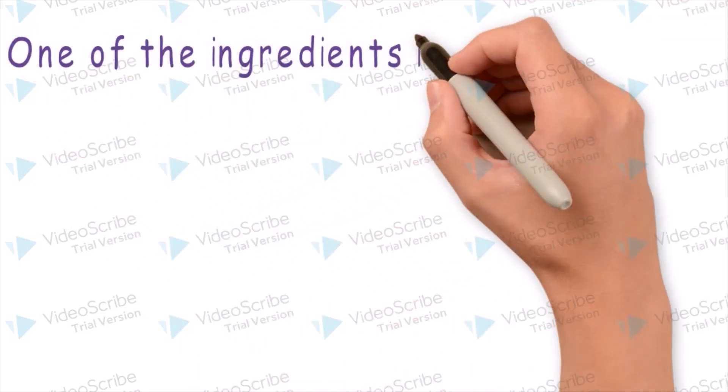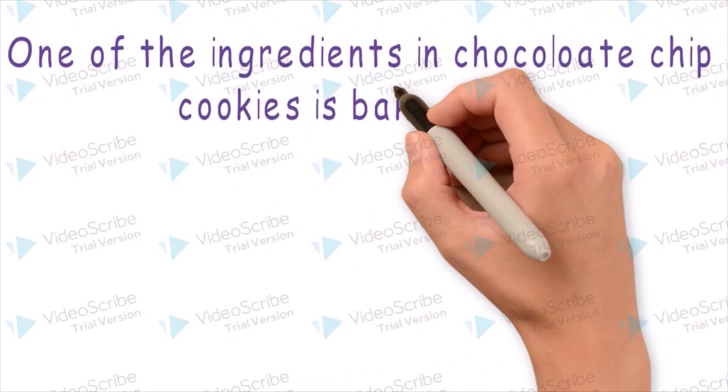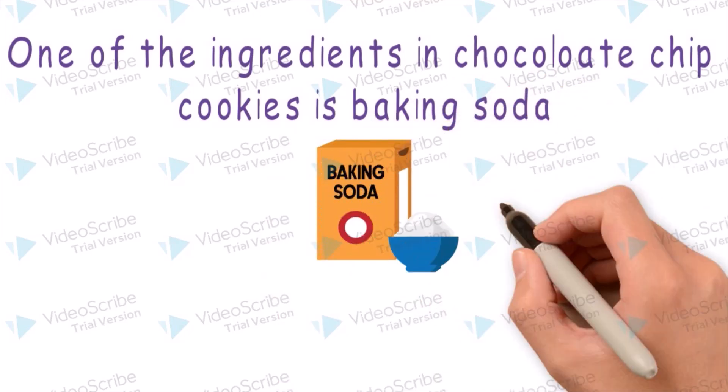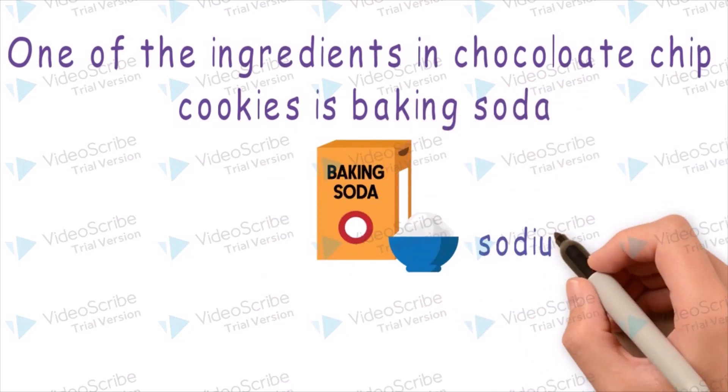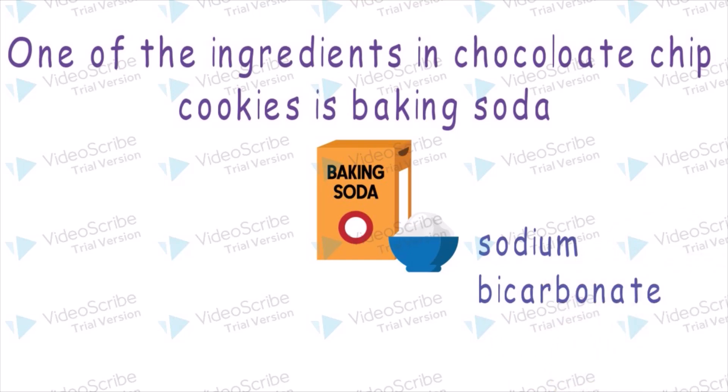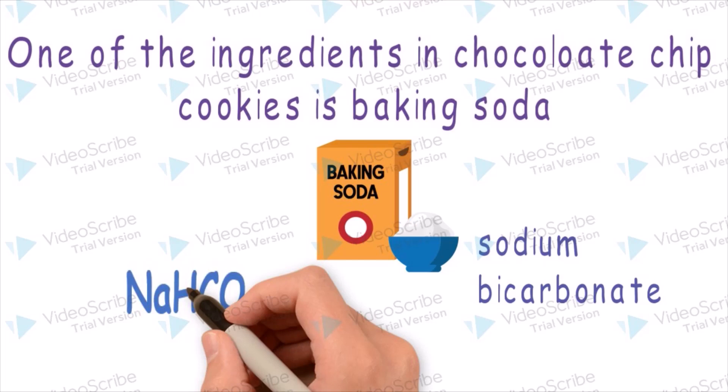One of the ingredients in chocolate chip cookies is baking soda, also known as sodium bicarbonate. Its chemical formula is NaHCO3.